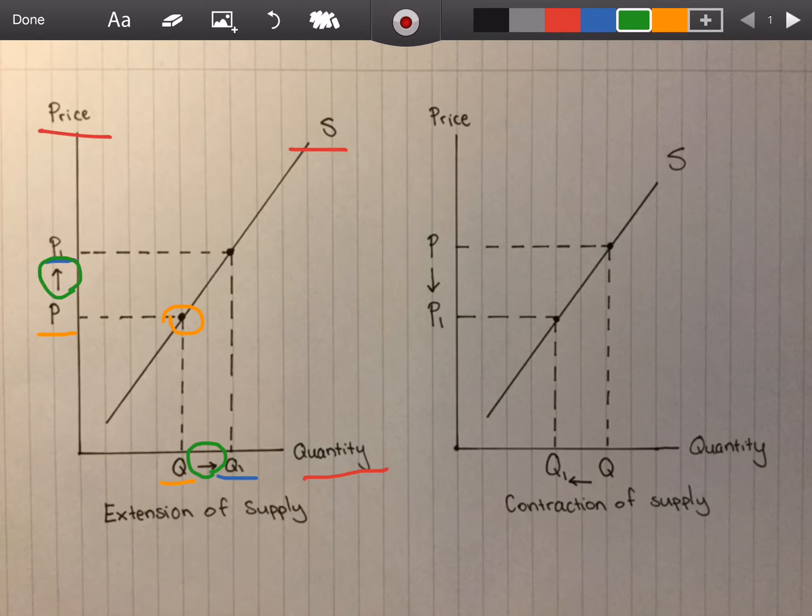Now what I've seen is sometimes people will do something like this, pointing an arrow showing that the point along the supply curve has changed, but that's really not necessary if you do what I've shown you before.